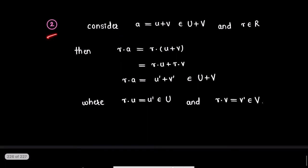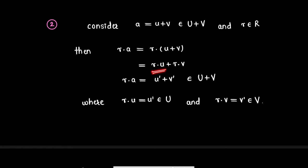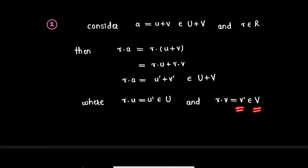For number two, consider an element a from set U plus V, so a will be of the type u plus v, and some element r from ring R. Then we have r·a equals r·(u plus v), which equals r·u plus r·v. Therefore r·a equals u' plus v', where u' = r·u is an element from ideal U and v' = r·v is an element from ideal V.